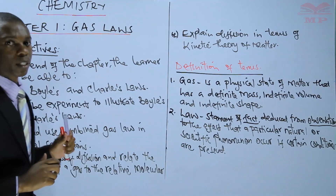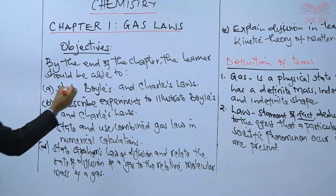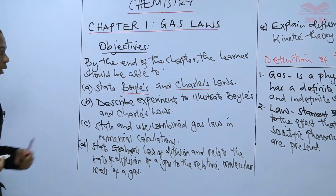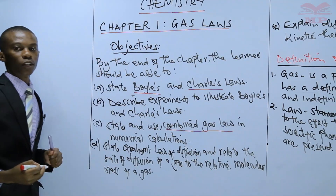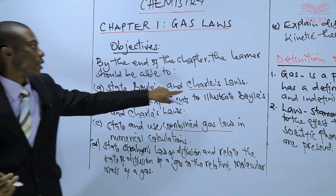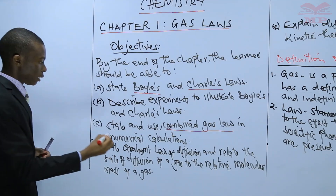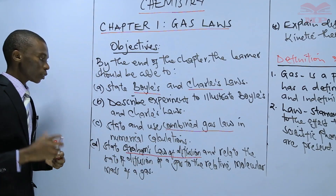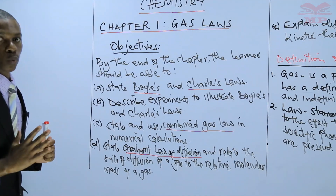Talking about laws, in this chapter we have four laws which we will be talking about: Boyle's law, Charles's law, the third is the combined gas law — and the reason why we are calling it combined gas law is because it combines both Boyle's and Charles's laws. And lastly, we have Graham's law of diffusion. Those are the four laws we are going to study in this chapter.